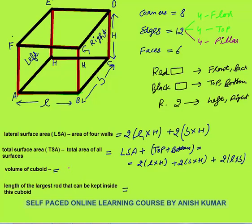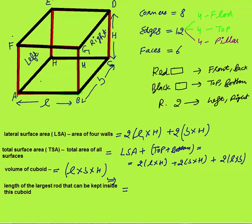Now, what is the volume of a cuboid? Volume is how much water can come inside the cuboid — if you consider it as a hollow empty room. If you consider length as L cm, breadth as B cm, and height as H cm, the volume of the cuboid will be L into B into H cubic centimeters.